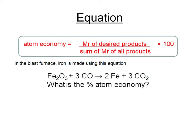Here's a question. In the blast furnace, iron is made using this equation. Using a periodic table, could you work out the percentage atom economy of this process to make iron? The answer will be on the next slide, so you might want to pause and have a go.